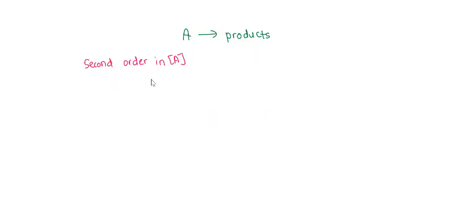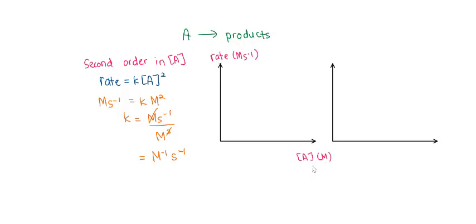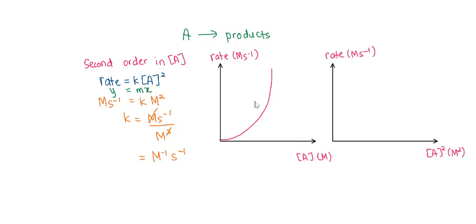If the reaction is second order with respect to concentration of A, the rate law is: rate equals K times concentration of A to the power of 2. To find the units of K: rate is molar per second equals K times molar squared. So K equals molar per second over molar squared, giving units of per molar per second (M⁻¹s⁻¹). By plotting rate versus concentration of A, where Y equals MX², you get a positive quadratic graph. But if you plot rate versus concentration of A squared, you get a linear graph Y equals MX starting from zero.